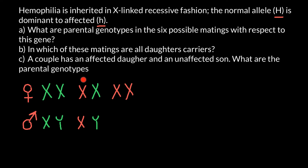Three female genotype variants multiplied by two male genotype variants gives us six possible matings.